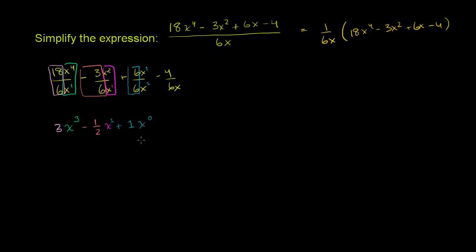And then assuming x does not equal 0. And then finally, we kind of have to assume x doesn't equal 0 in this whole thing, otherwise we would be dividing by 0.